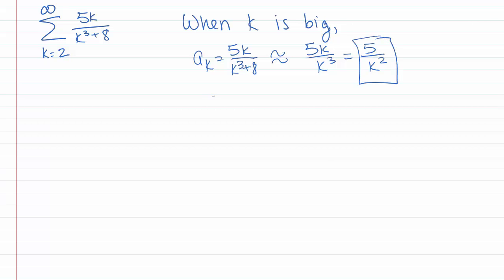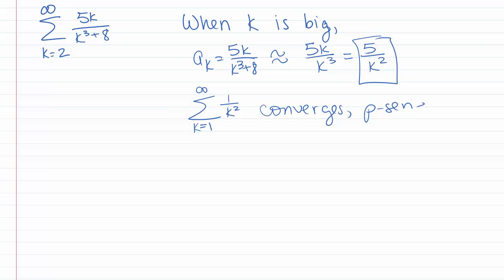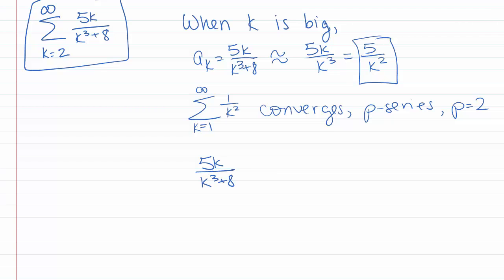So we'd like to compare with 5 over k squared if we can. We know that the series k goes from 1 to infinity of 1 over k squared converges, because it's a p-series with p equal to 2. So if we want to show that our original series converges, let's see if we can show that 5k over k cubed plus 8 is less than or equal to 5 over k squared.